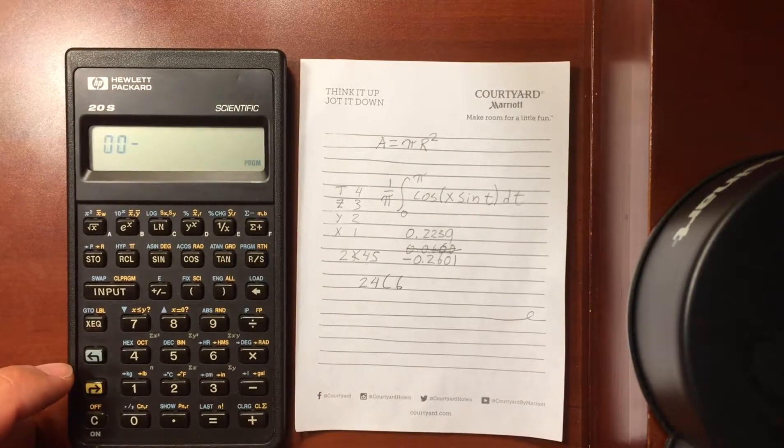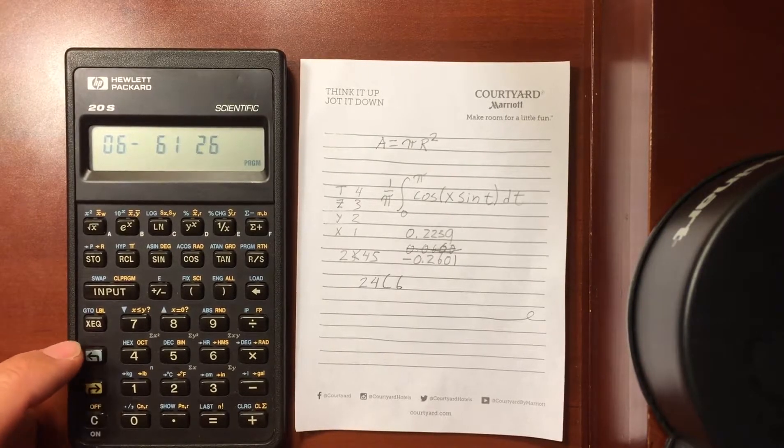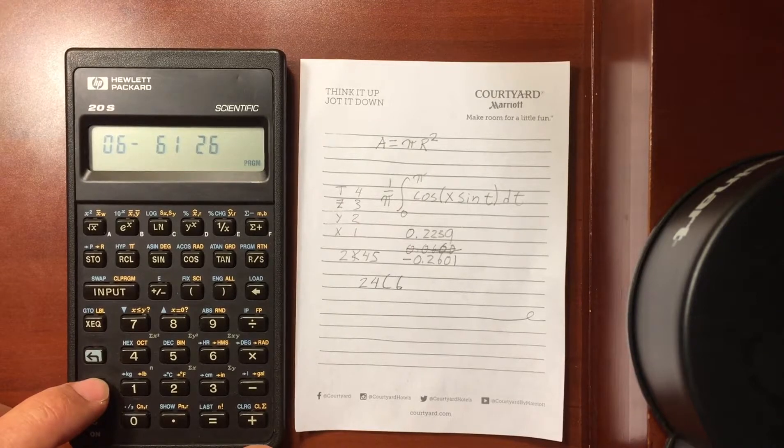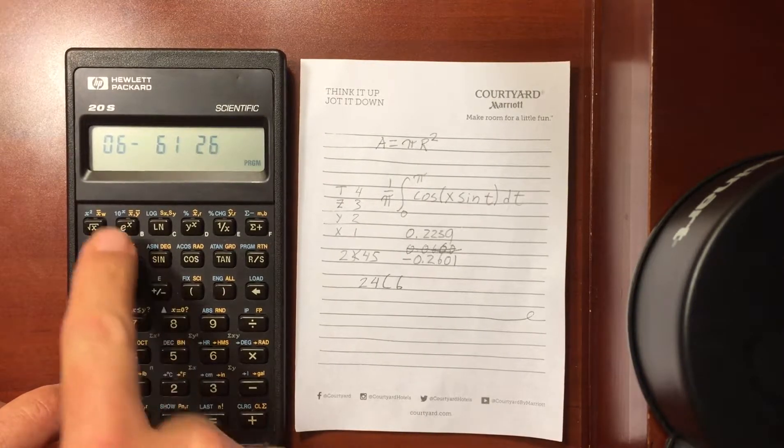We could go back to that programming area, scroll up here, go to the bottom. And this time we could insert a label B. Label B.